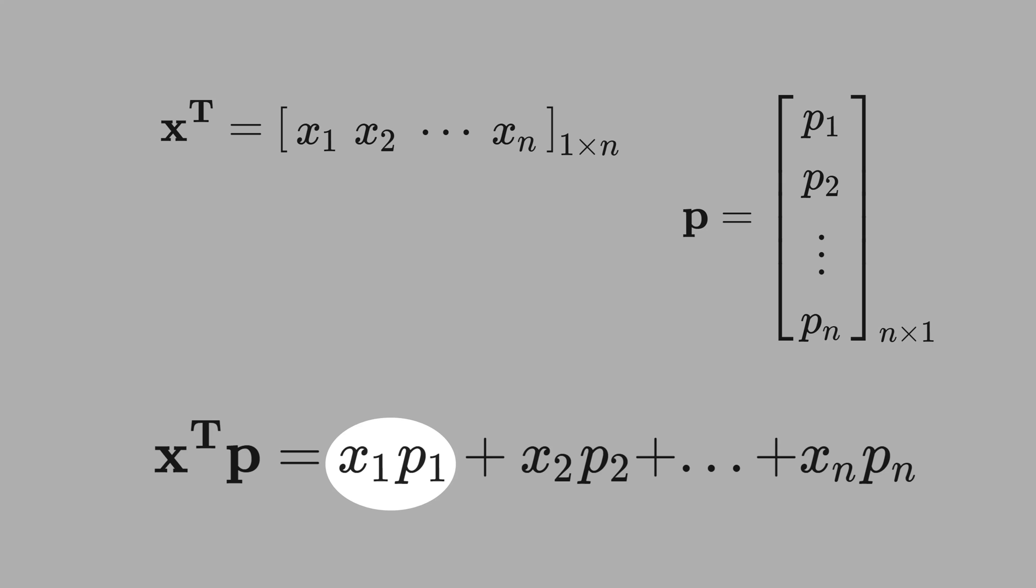Then we get x1 times p1, x2 times p2, and xn times pn.